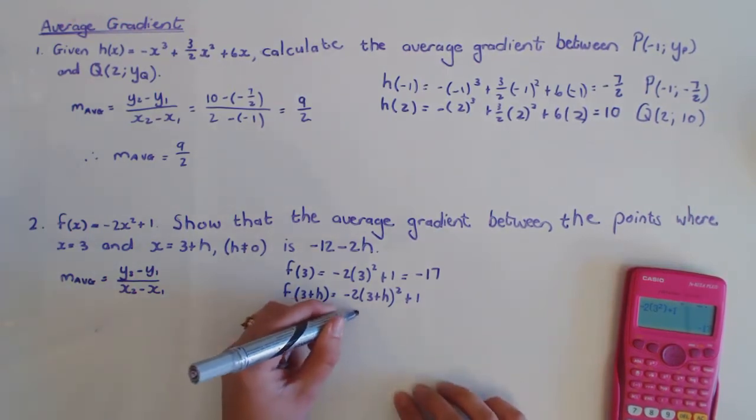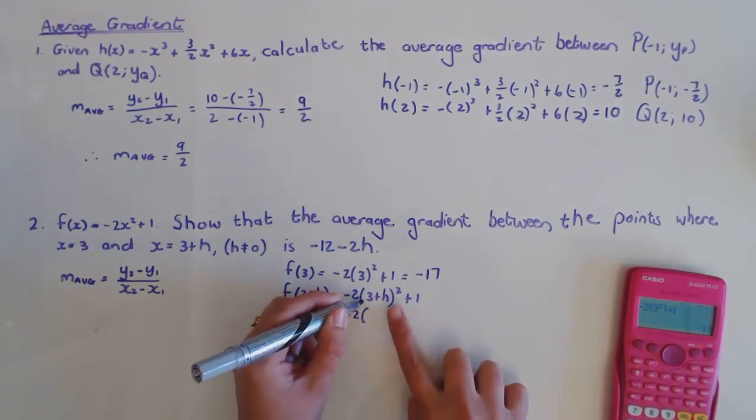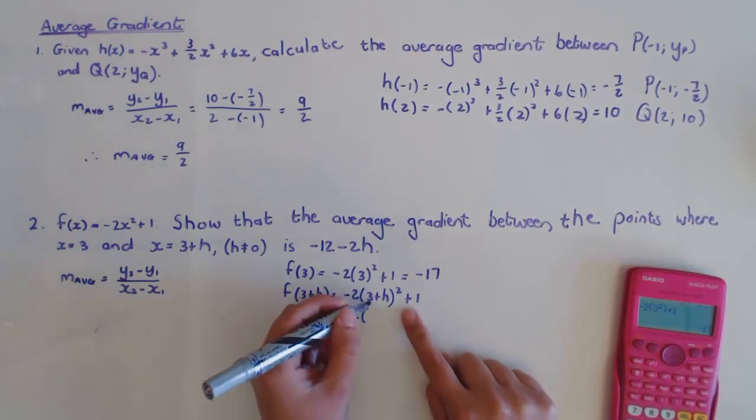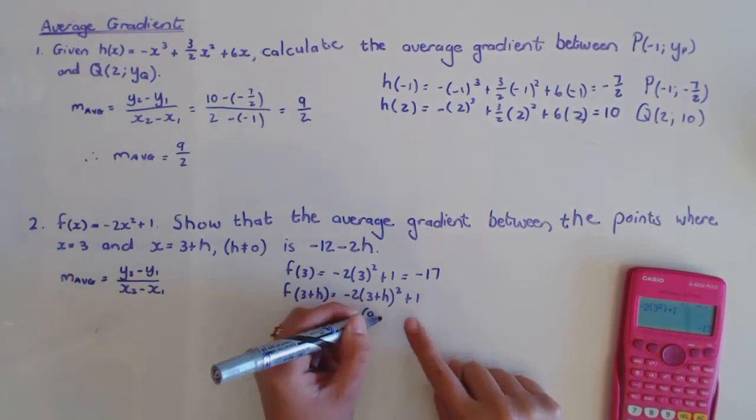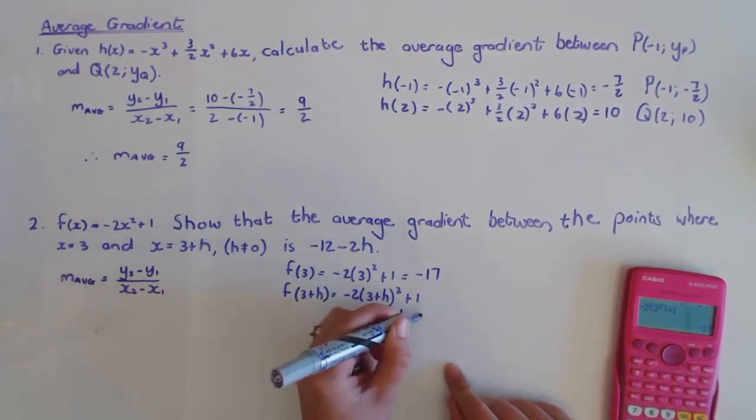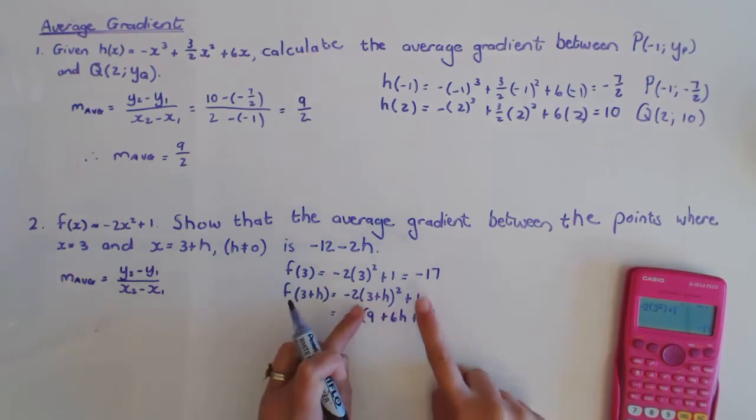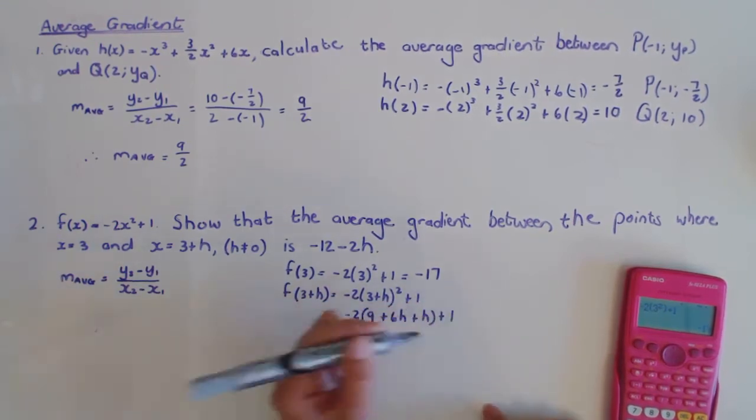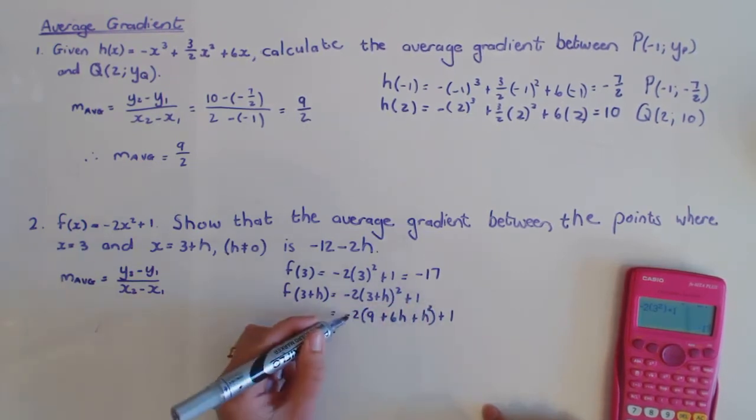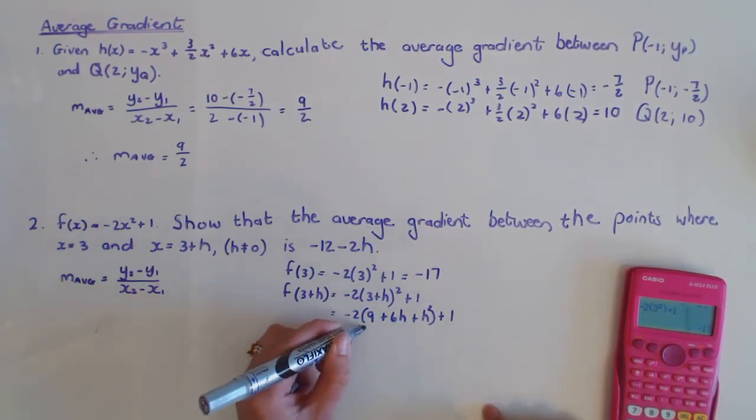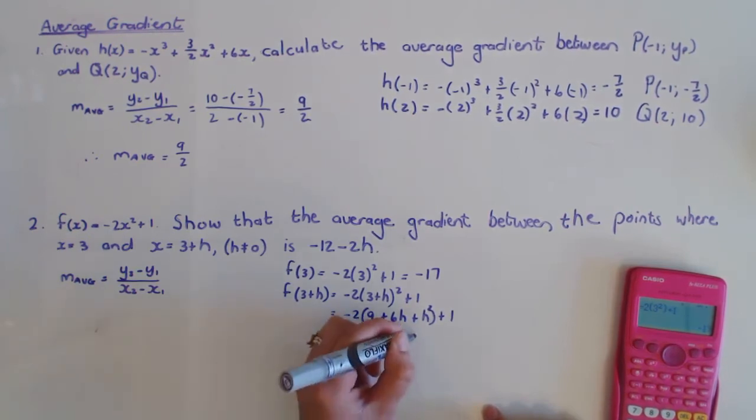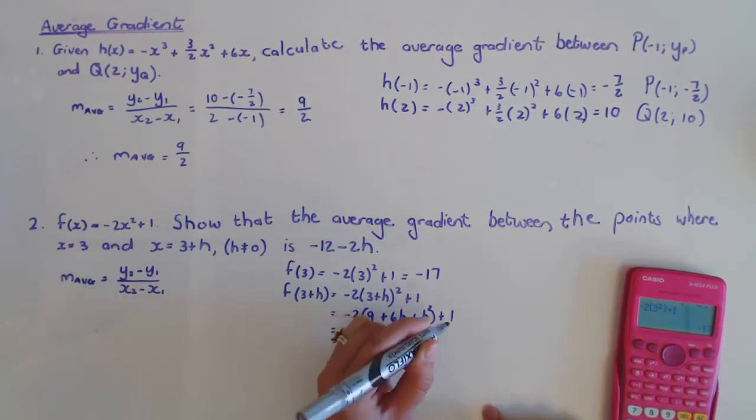So this will then be -2, and if I multiply this double bracket out, it's going to become 9 + 3h + 3h, which is + 6h, plus h². I trust that you know how to multiply a bracket out. And then I'm going to multiply the negative 2 in, so I have -18 - 12h - 2h² + 1.